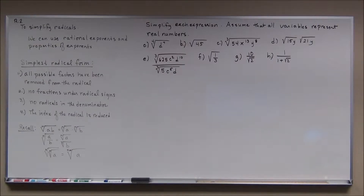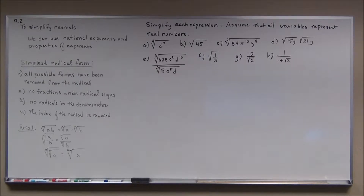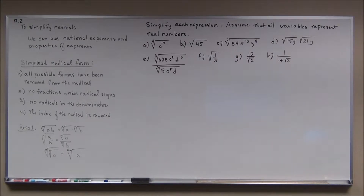Now let's go to simplifying radicals. Because we can use rational exponents to represent radicals — with the denominator of the rational exponent being the index of the radical — we have to remember that we can use our properties of exponents to help us with this as well.